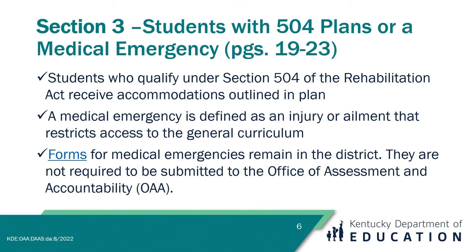Section 3 of the Inclusion of Special Populations Regulation focuses on students who receive accommodations by way of a 504. Another topic in this section is medical emergencies. This information can be found on pages 22 through 28 of the regulation document. Anyone who qualifies with a 504 must have a current plan. The 504 plan focuses more on accommodations due to health impairments rather than learning disabilities. A student with a broken dominant arm, for instance, can receive a scribe accommodation under this section. Another example: a student dependent on reading glasses who cannot access them at testing time may receive a reader. Appropriate documentation must be kept on file at the school or district level and is not required to be submitted to KDE.